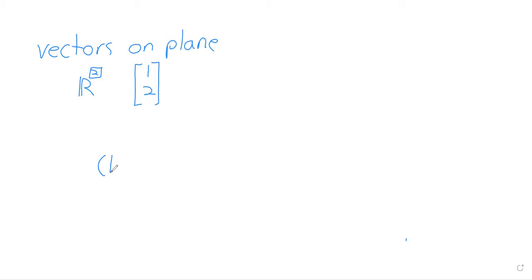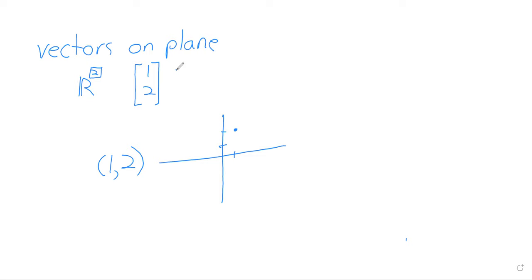We have a way to visually represent ordered lists of two numbers, and that's the Cartesian plane. If instead of a vector we had the point (1, 2) and we wanted to represent that point visually, we'd be able to do so. We can represent vectors visually as well. To visually represent the vector (1, 2), we draw the point (1, 2) and then connect the origin to the point with an arrow emanating from the origin and ending at the point.